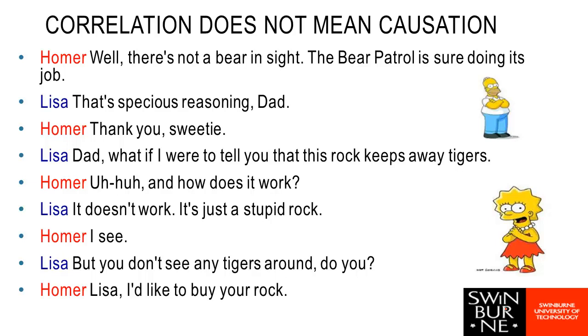So if we have a look at what Professor Homer Simpson has to say about correlation, here's a particularly good example about the bear patrol, and Lisa has the rock that she says keeps away tigers. And Homer says, how does it work? And she said, well, it doesn't work, it's just a stupid rock. But you don't see any tigers around, do you? So what she's done there is she's tried to somewhat sarcastically demonstrate that even though there's this correlation, there's no tigers, there's a rock, doesn't mean there's any sort of causal relationship happening there.